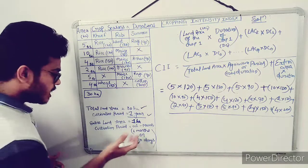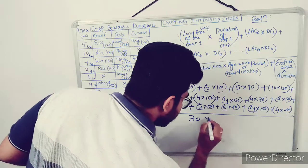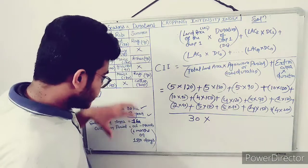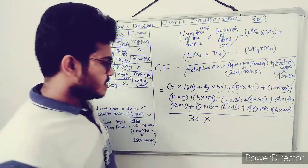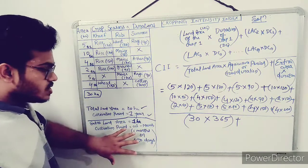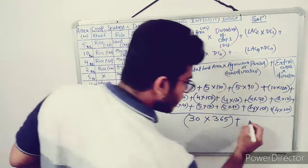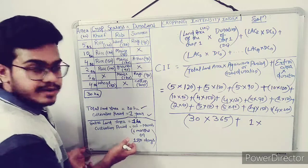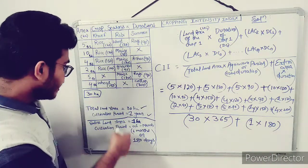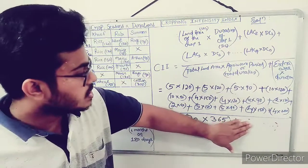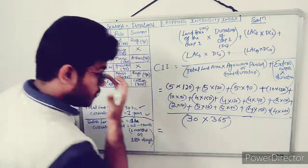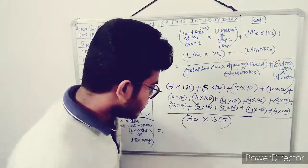The denominator is total area = 30 hectares × total duration for one agricultural year = 365 days. The extra area part can be ignored here since it wasn't specified in the question. Now calculate this and let us know what cropping intensity you get. Suppose we get a value of 0.74 — then we can interpret what this cropping intensity value means, whether it is at minimum, optimum, or maximum levels. This calculation is a task for all my viewers — please solve it and mention your answer in the comment section.